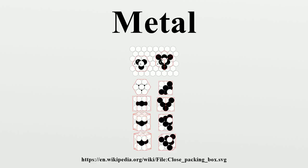Physical properties: Metals in general have high electrical conductivity, high thermal conductivity, and high density. Typically they are malleable and ductile, deforming under stress without cleaving. In terms of optical properties, metals are shiny and lustrous.